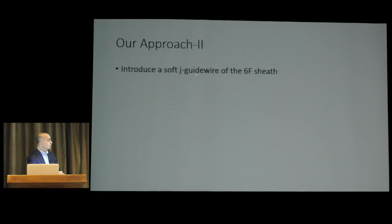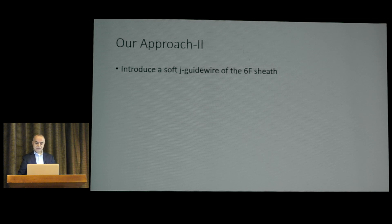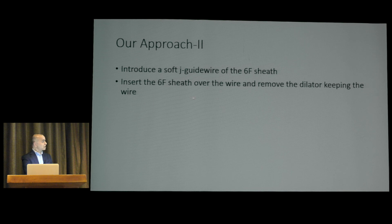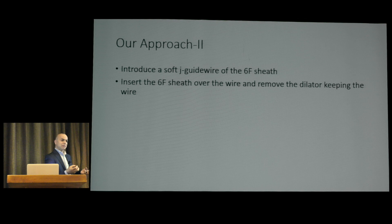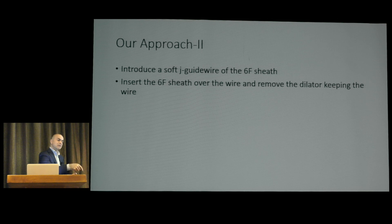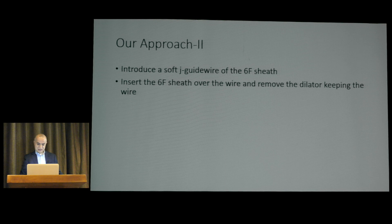After confirming position, introduce a J-wire and advance a 6 French sheath into the pericardial space, then remove the dilator. Do not remove the wire — keep it inside the sheath. Without the wire, after aspirating 20–50 cc, the sheath tip can become clogged by suction against surrounding tissue, preventing further aspiration. The wire guarantees continued access to the pericardial space.